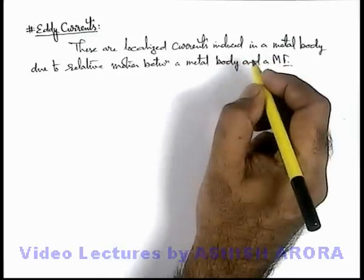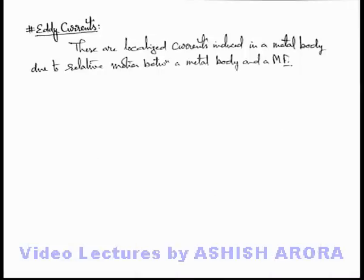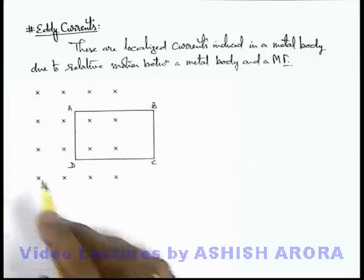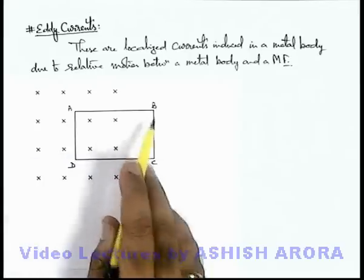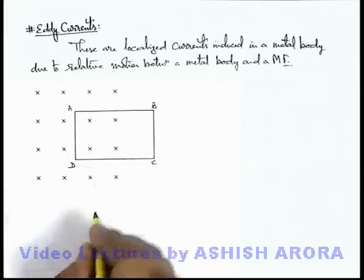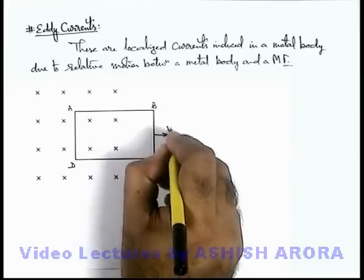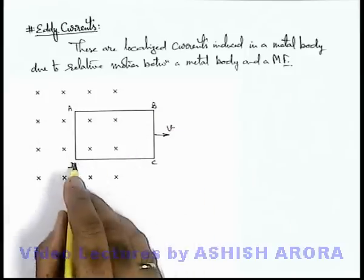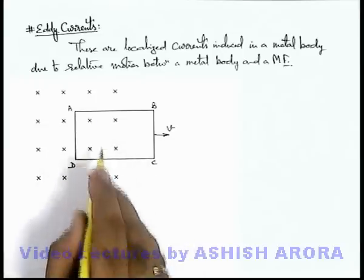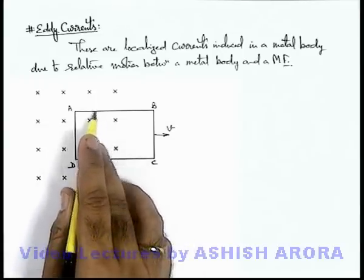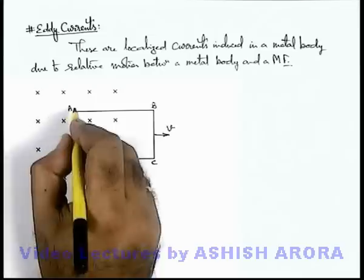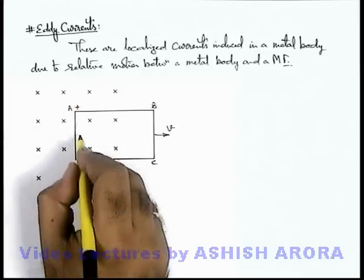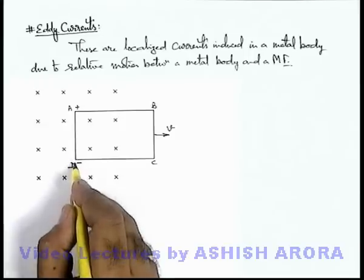To understand eddy currents, let's have an example of basic electromagnetic induction. Looking at this picture, there exists an inward magnetic field directed into the plane of paper, and a wire loop ABCD is placed. If this wire loop is pulled toward the right with speed v, wires AB and CD are not cutting any magnetic flux so no EMF will be induced in them, but wire DA will be cutting magnetic flux and an EMF will be induced such that point A is at high potential and D is at low potential.